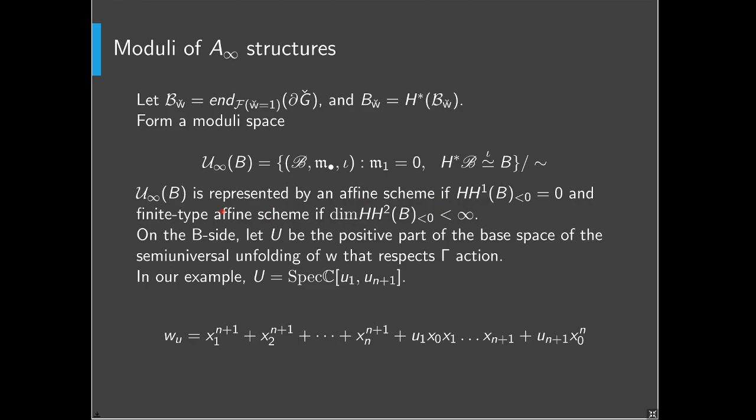The conditions for this moduli space to exist nicely are: first, HH¹ vanishing, which gives you an affine scheme; but it could be an inverse limit of Artinian structures, so you also need a bound on HH², meaning HH² in a certain grading range is finite dimensional. Then this is an affine scheme of finite type. B is a graded algebra — there's a cohomological grading and a second grading coming from the grading on algebra B. If this is finite dimensional, this is an affine scheme of finite type.